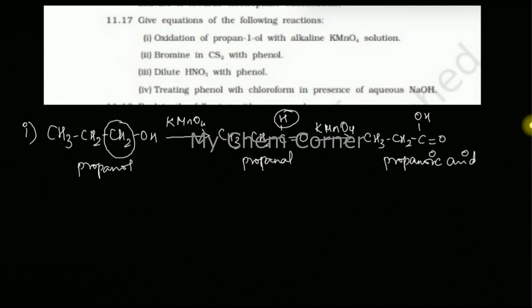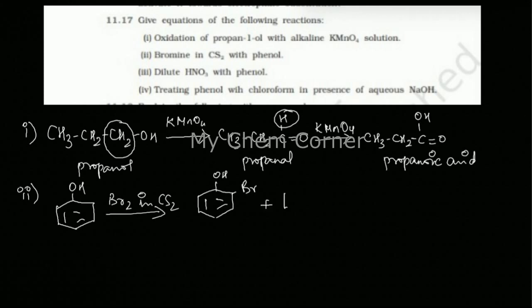Second one is bromine in CS2 with phenol. Here I have phenol reacting with Br2 in CS2. CS2 is nothing but carbon disulfide, it is a solvent. You're trying to dilute that Br2 by dissolving in a solvent. Because phenol is an ortho-para directing group, you will get 2-bromophenol and 4-bromophenol, or basically ortho-bromophenol and para-bromophenol.